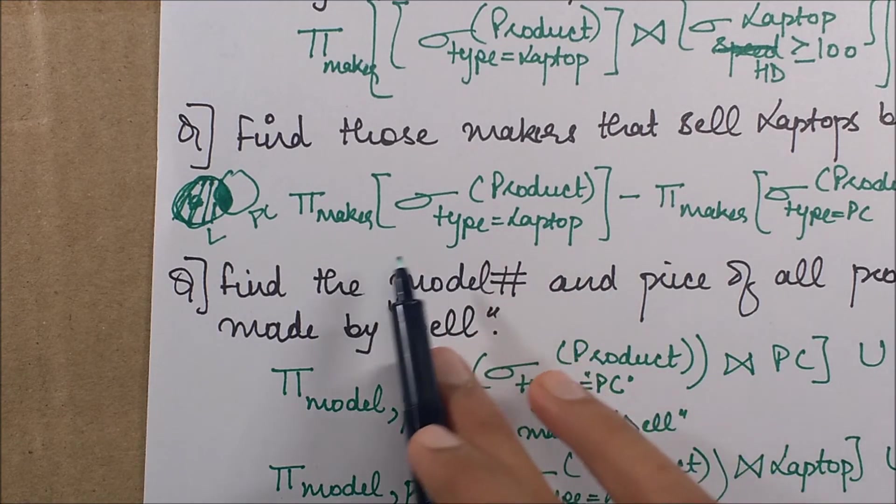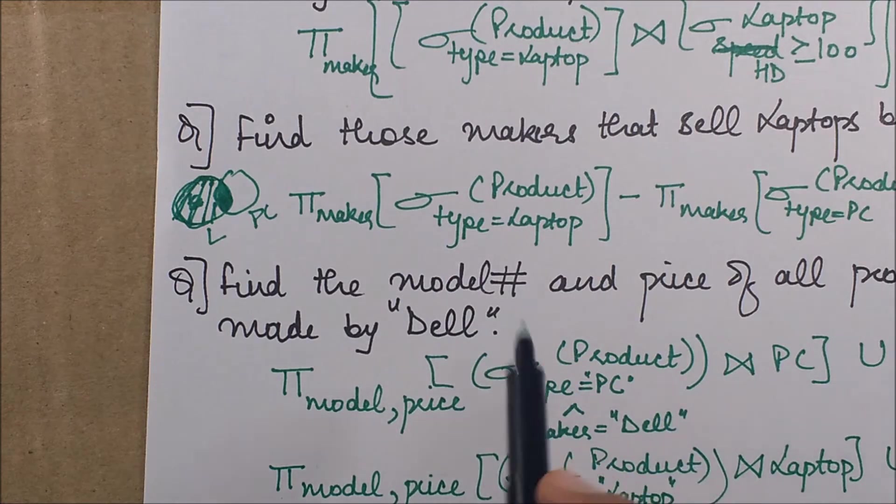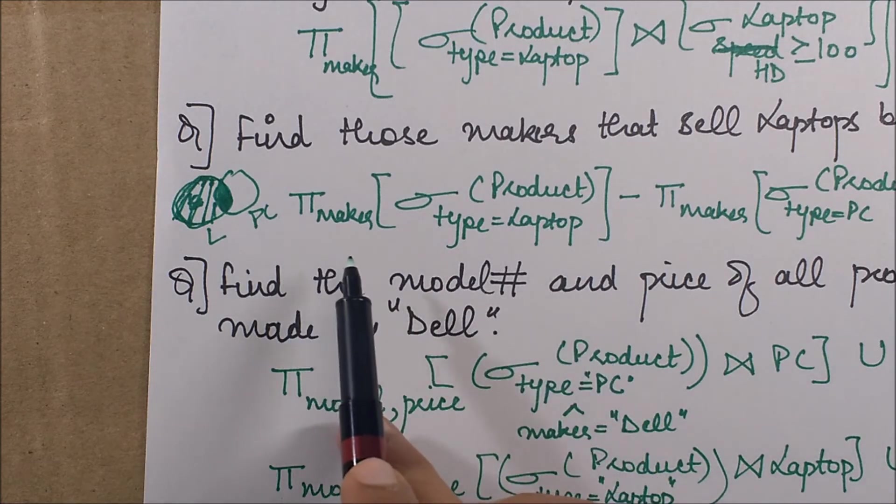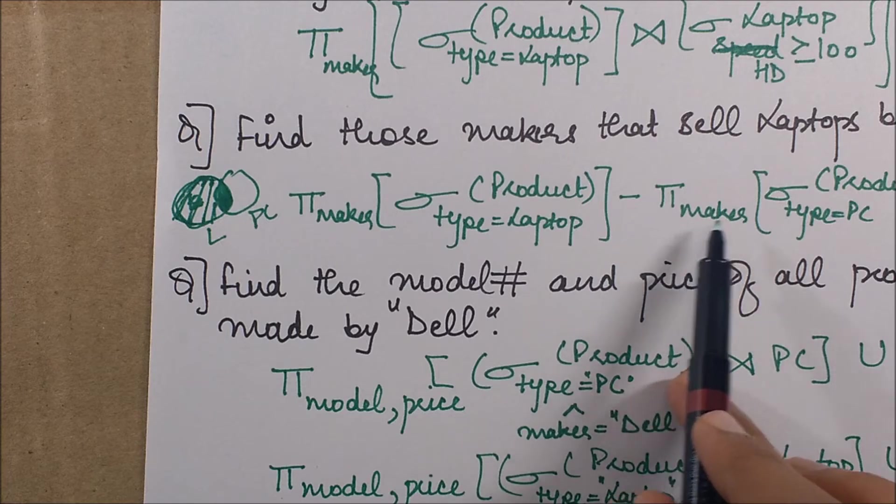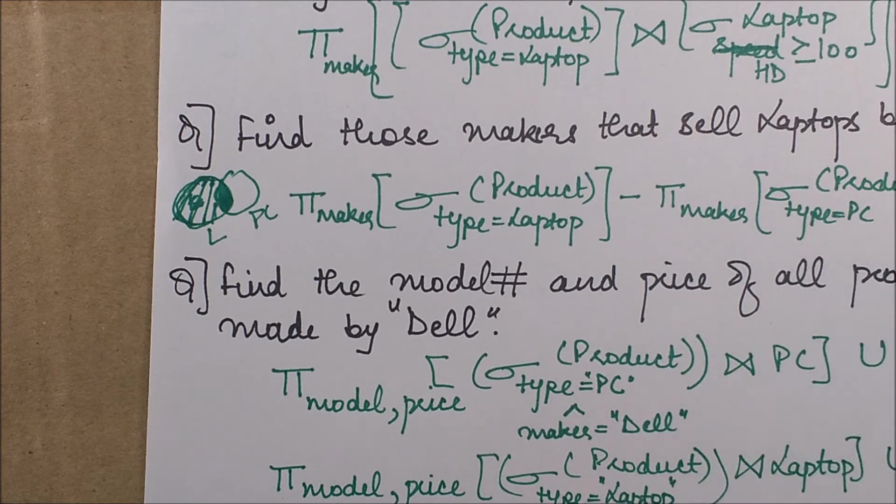So from the product table, we apply a condition that type equals laptop, and we project the makers, and then we subtract the makers selling PCs. That's all for this one. Let's move on to the next.